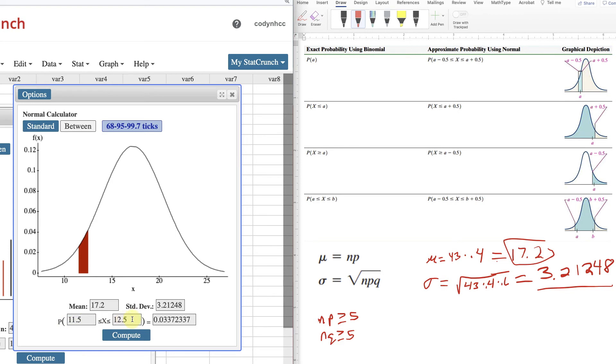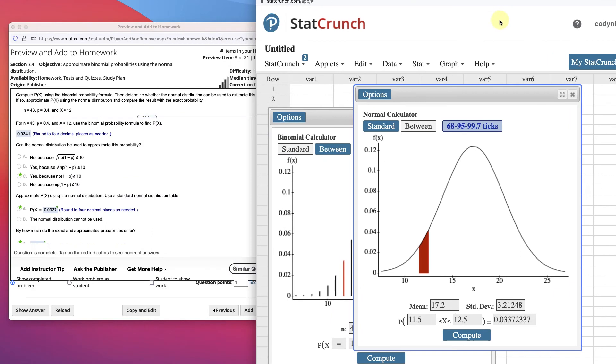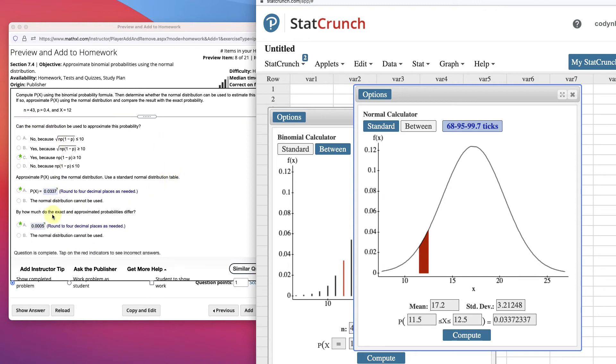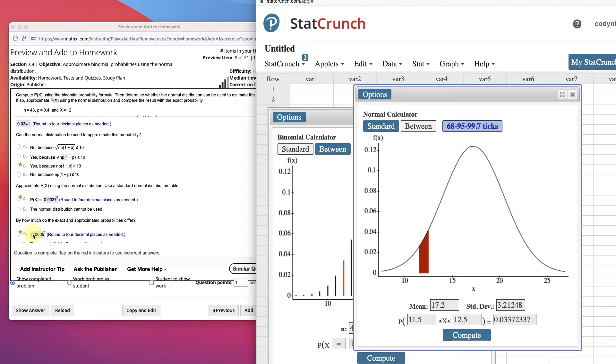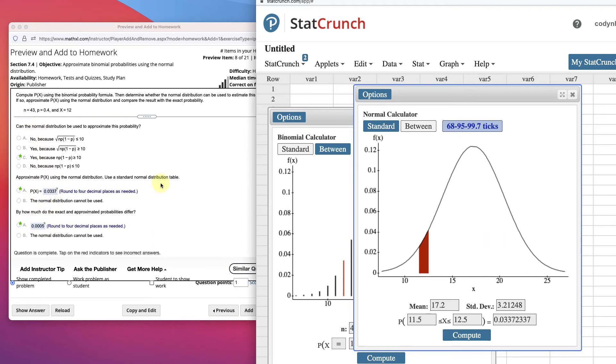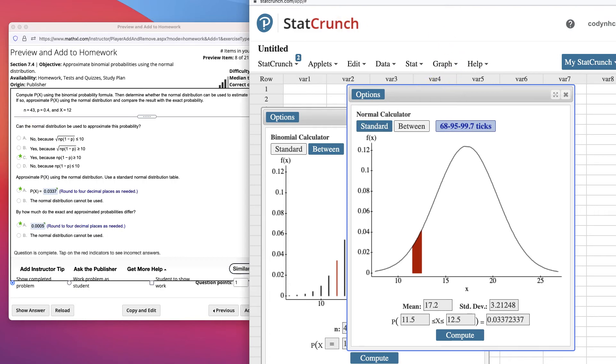So here's my exactly 12. Compute 0.0337. 0.0337 and 0.0341. This is an approximation to this number. It says, by how much do the exact and approximate probabilities differ? It looks like they differ by 0.0005. So they don't differ by that much. It's a good approximation. So let's try one more.